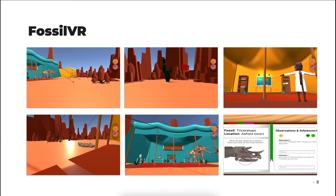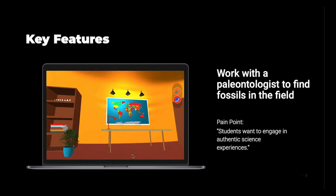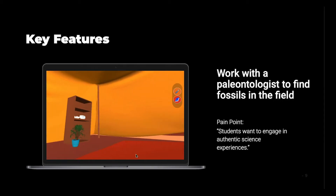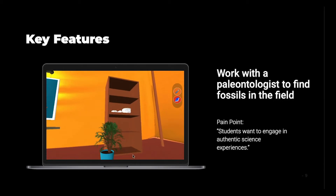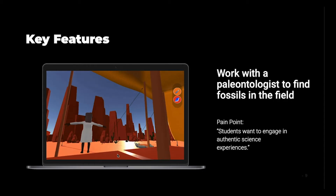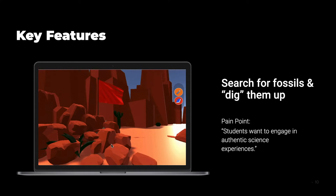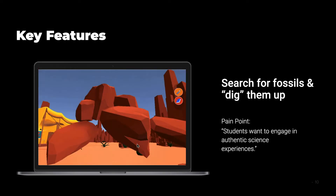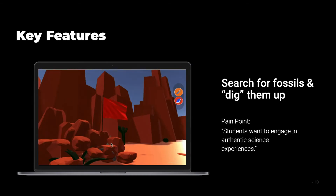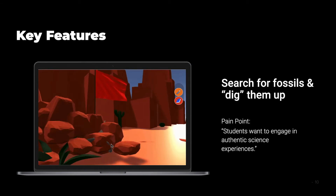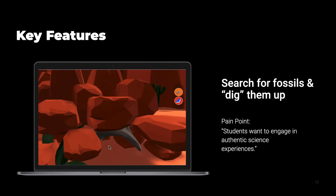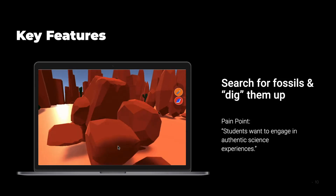This led us to Fossil VR, which is not meant to be a standalone tool, but a supplemental tool used when a teacher is teaching a unit on fossils. This will give students extra time to engage in the material. Fossil VR introduces students to paleontologist Hannah working in the Sahara desert, and they're able to go with her, look at her lab in the field, and help her find fossils. Students are also able to dig up fossils by going around the desert and looking for red flags, and when they find these red flags, they are able to pick up rocks and move them around, as well as pick up the fossils and observe them.